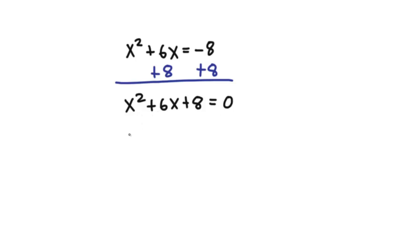Alright, so now we can factor this out. Make sure it's equal to 0. And x, x, and the factors of 8 to make 6 is 2 and 4. And since both of them are plus signs, we can just say this is plus and this is plus.